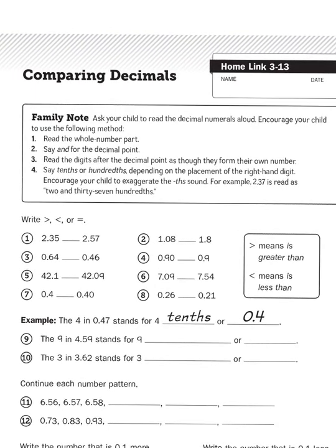I know that kids will sometimes just skim through the directions and jump right into the numeric problems, but sometimes the directions are very useful to read. It says, ask your child to read the decimal numerals out loud. Encourage your child to use the following method: read the whole number part, say 'and' for the decimal point, read the digits after the decimal point as though they form their own number, say tenths or hundredths depending on the placement of the right-hand digit, and encourage your child to exaggerate the 's' sound.